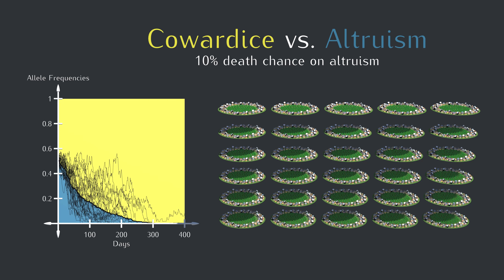There's a lot going on in this graph. Each thin black line is one run, and the thick black line is the average. In some runs, the altruism allele lasted longer than others, but extinction seemed inevitable. One did hang on for all 400 generations, but based on the other runs, it seems like it's pretty doomed in the long run.